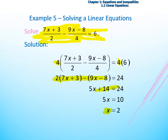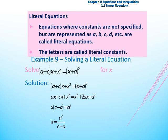Let's move to another example: the literal equations. Literal equations are those where constants are not specified but are presented as a, b, c, and d — we have only symbols and no numbers. The letters are called literal constants. We concentrate only on the value we are solving for. If we said we want to solve for x, we will get x to the left-hand side and all other values or letters to the right-hand side.